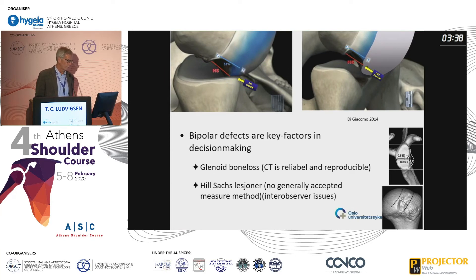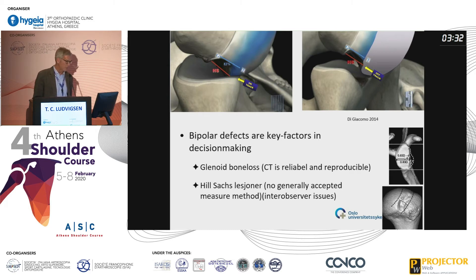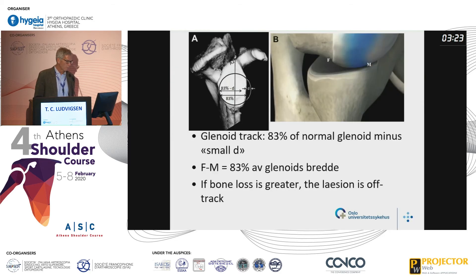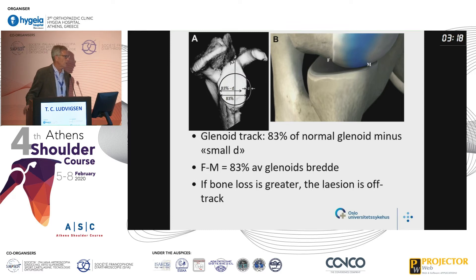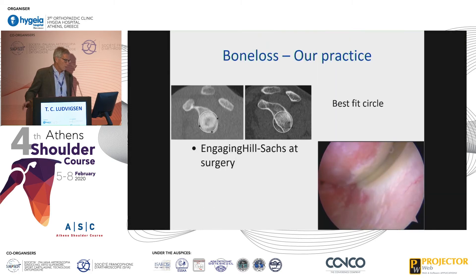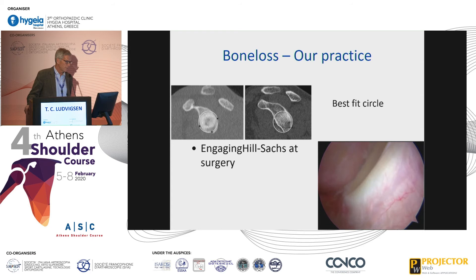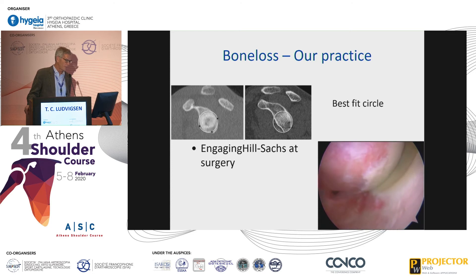For bipolar effects, it is especially important to realize that you have a bipolar defect. Giacomo introduced his on-track and off-track equation in 2014, said to be helpful in decision-making in bipolar defects. The problem with this is that it is notoriously difficult to apply, and it has been shown in the literature that the inter-observer variation is very great.